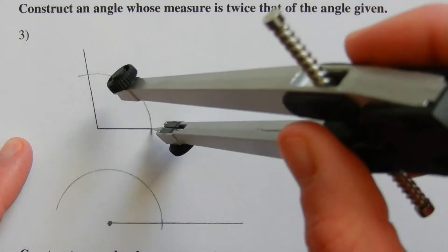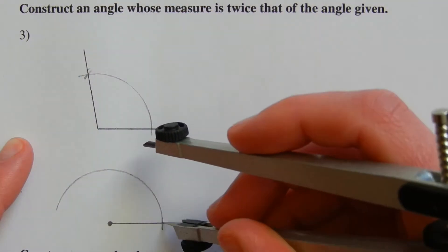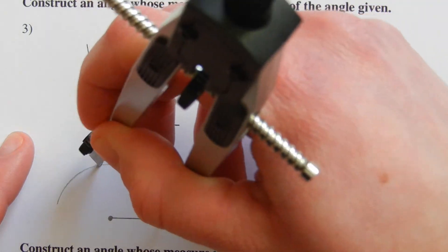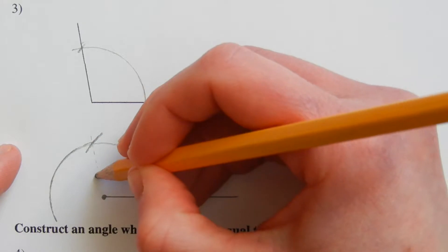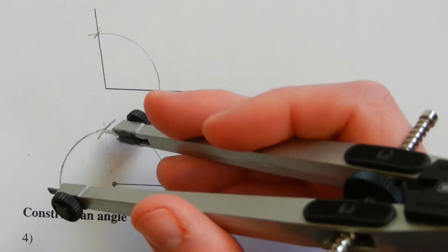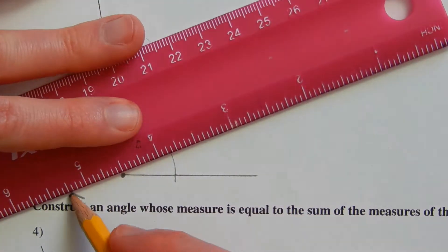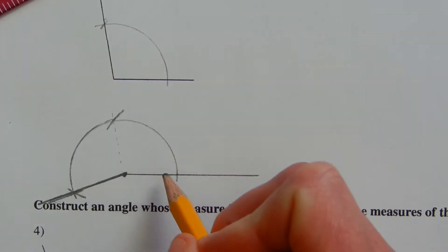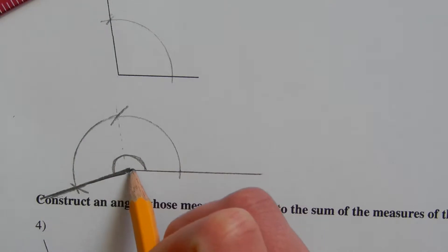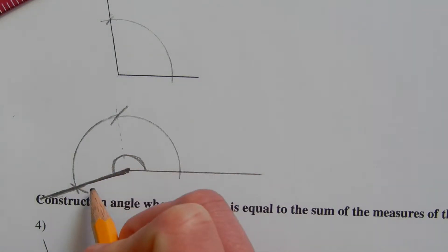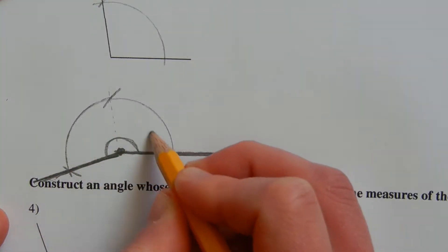From one intersection point of the arc on our original angle to the other intersection, we line up the compass, then from the intersection point on our new segment we make that mark. If we drew a line now to that intersection it would be congruent to the original angle. But from that new intersection point we draw another mark — that final intersection is the doubled angle. Note that this angle is greater than 90 degrees, so the doubled angle should be greater than 180 degrees, and visually it is.